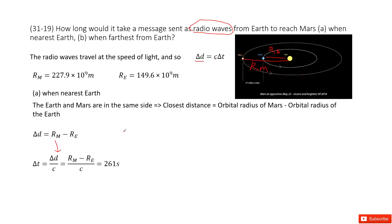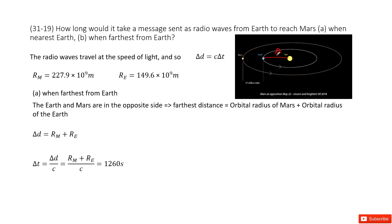We get the answer there. The second part asks you the farthest from Earth. So in this case, if Earth is there, this is R_E, and Mars should travel to there. This is the farthest distance R_M.